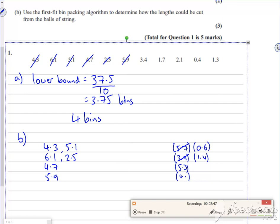3.4 won't go in the first bin, won't go in the second bin, will go in the third bin. So 3.4 goes in there, knocking that down to 1.9. The 1.7 won't go in the first bin, won't go in the second bin, will sneak into the end of the third bin, leaving me at 0.2. The 2.1 won't go in the first bin, won't go in the second bin, won't go in the third bin, will go in the fourth bin. So that knocks that down to 2.